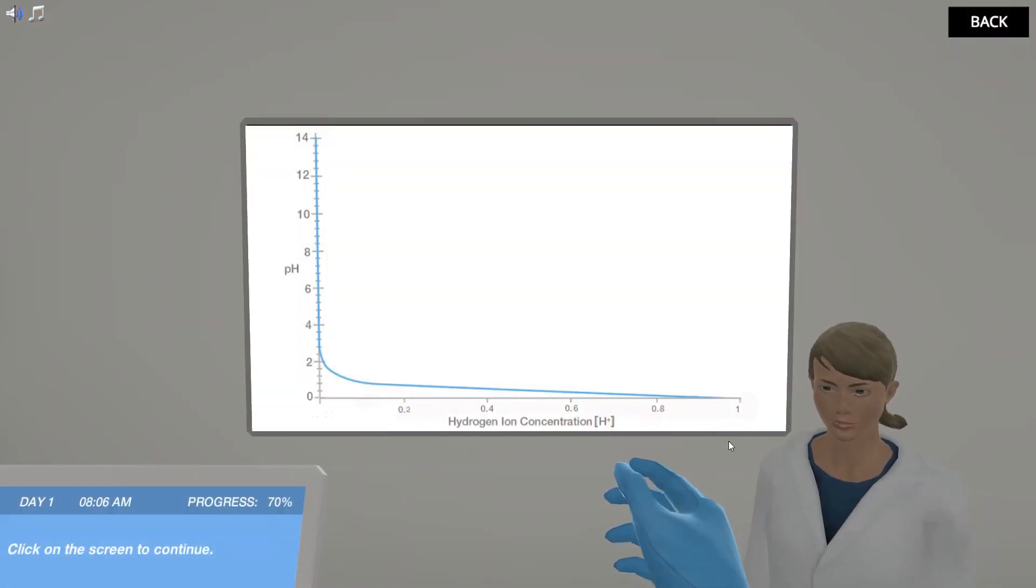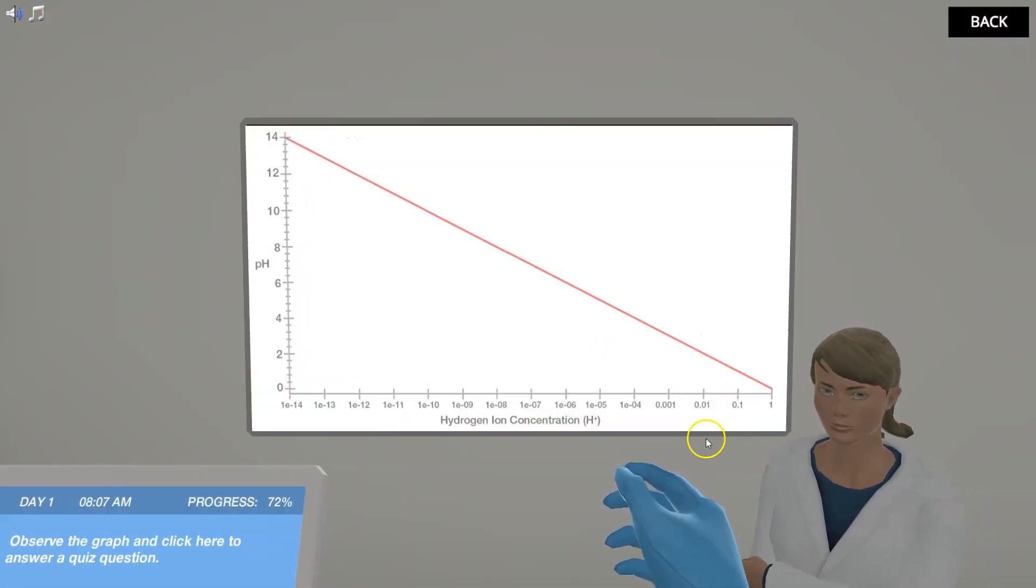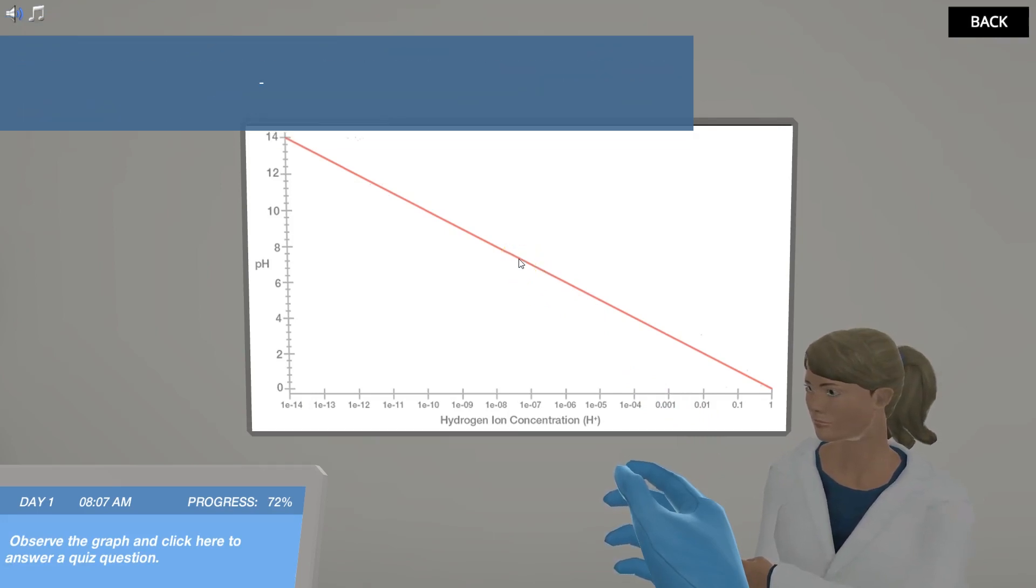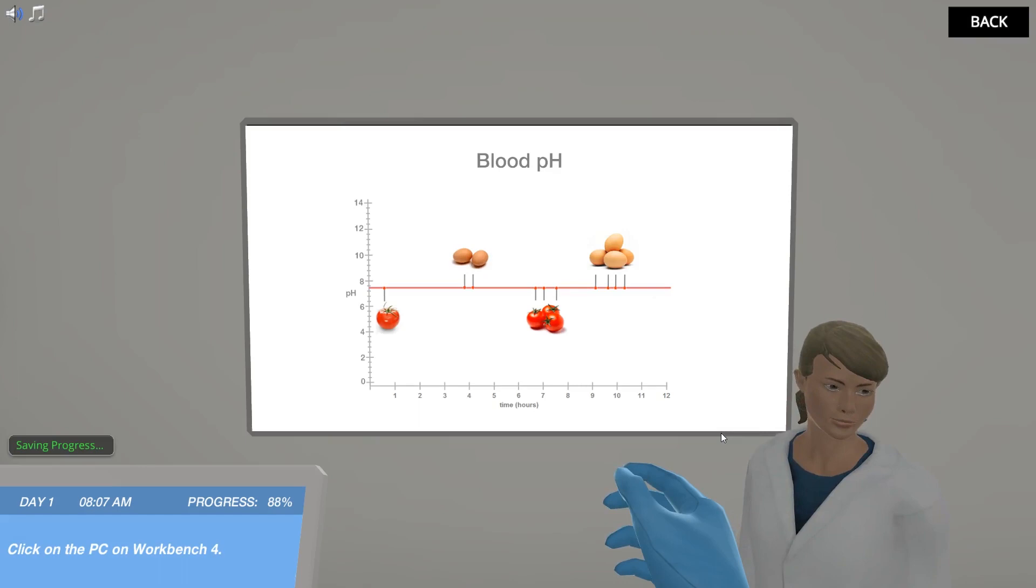Get familiar with the logarithmic pH scale and master the equations to calculate the pH and the dissociation constant of an acidic or basic solution. Can you guess the acidity of the food items you had for lunch?